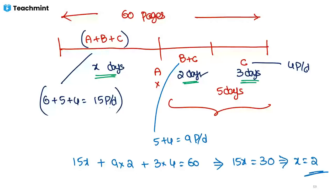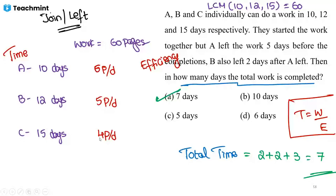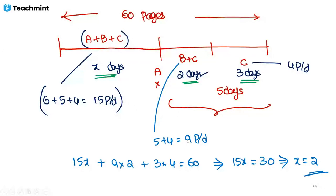Recap for the doubt: all three together do 15 pages per day for x days = 15x pages. B and C together: B is 5 pages per day, C is 4 pages per day, so 9 pages per day for 2 days = 18 pages. C alone: 4 pages per day for 3 days = 12 pages. Total: 15x + 18 + 12 = 60, so x = 2.